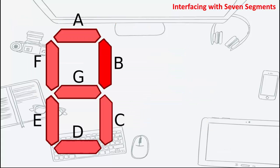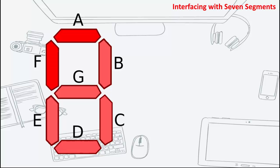By illuminating each individual segment of a 7-segment display, one can display a variety of numbers or characters. For example, to display the number 5, one has to illuminate segments A, F, G, C, and D. And to display another character or number, another set of segments needs to be turned on.